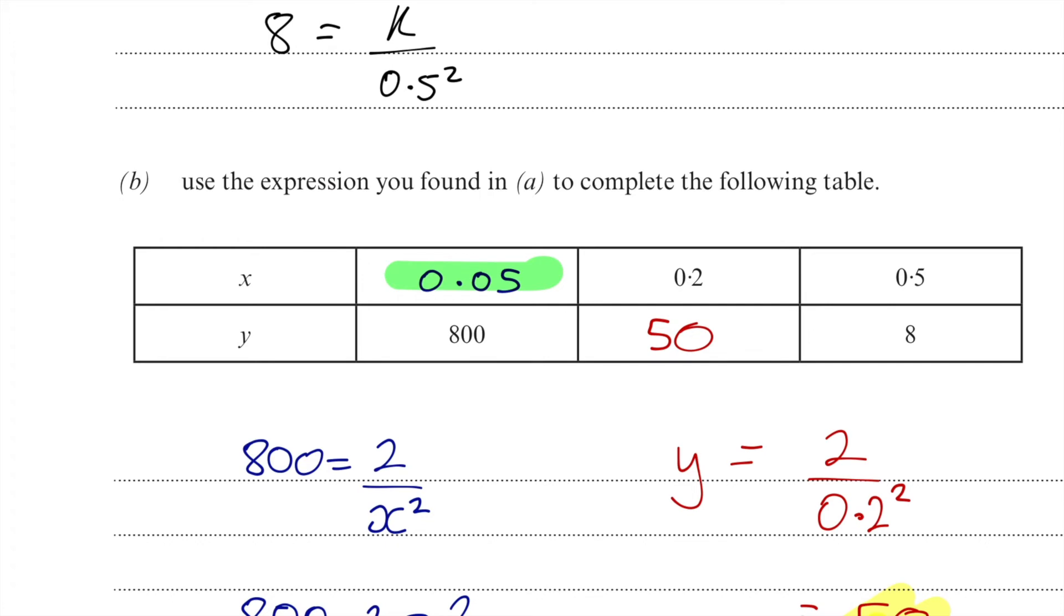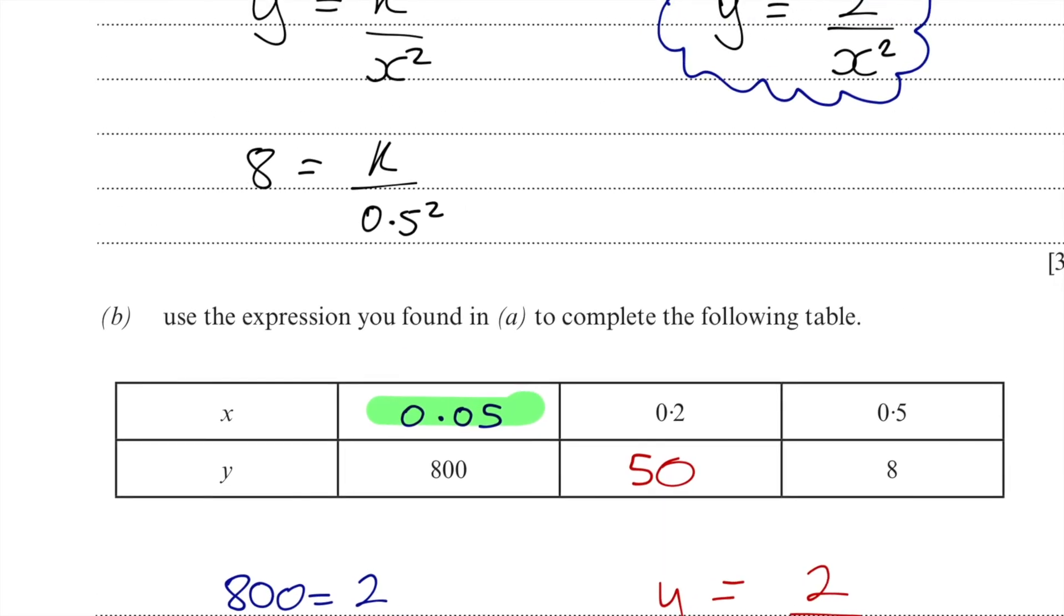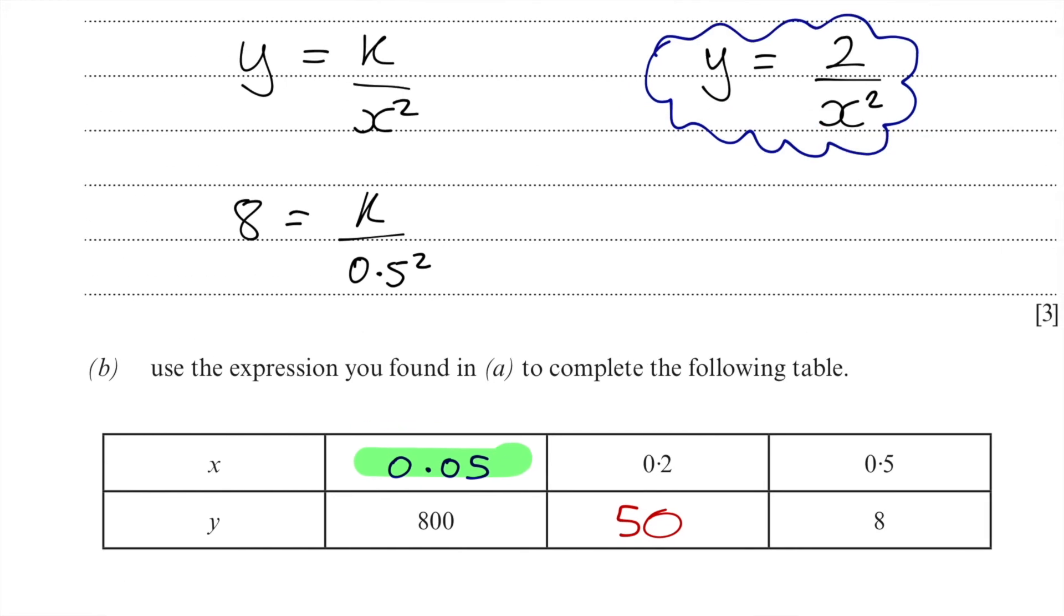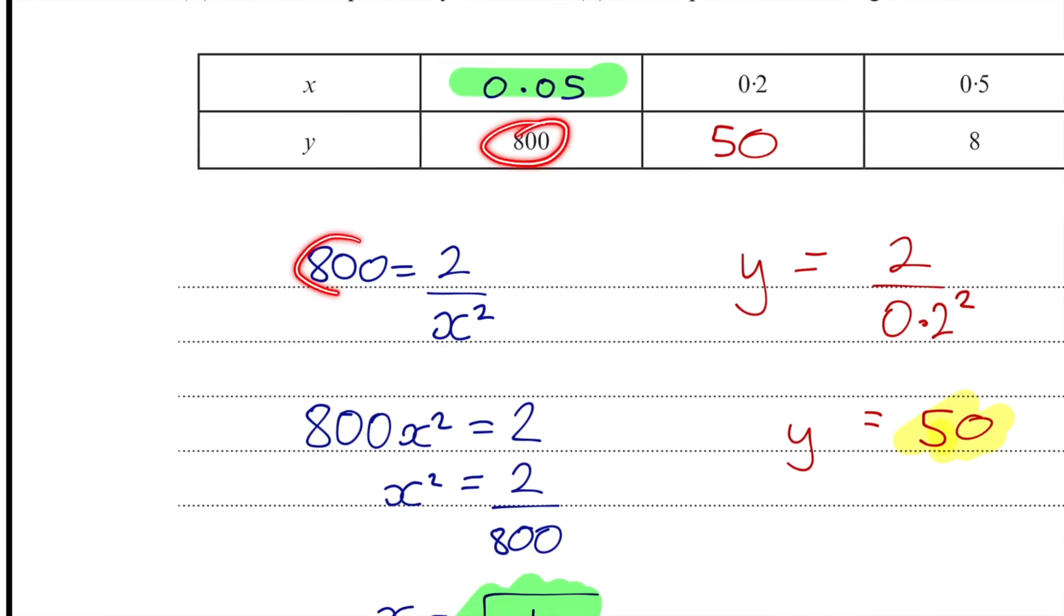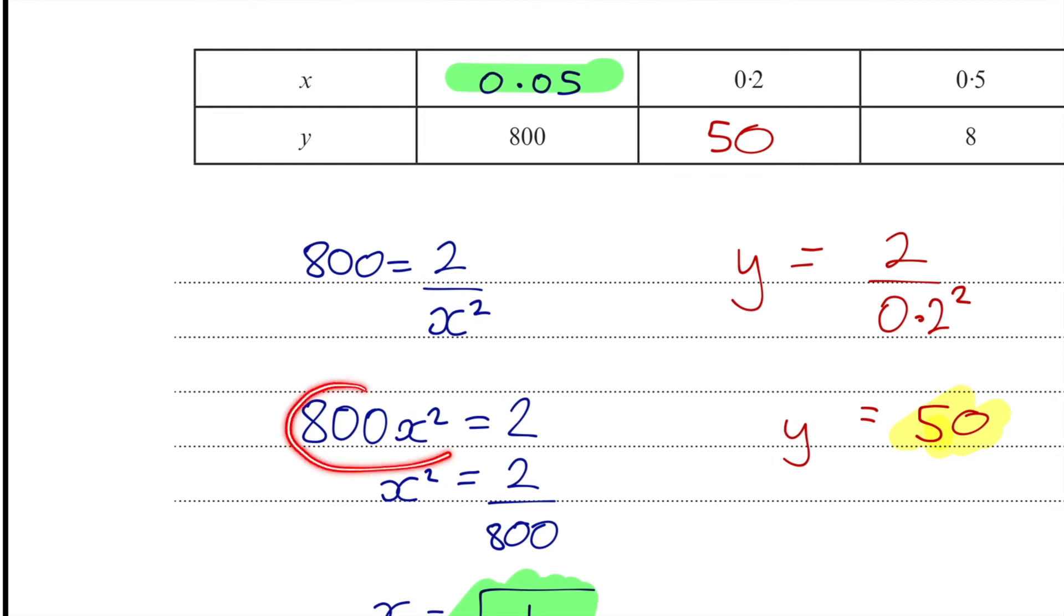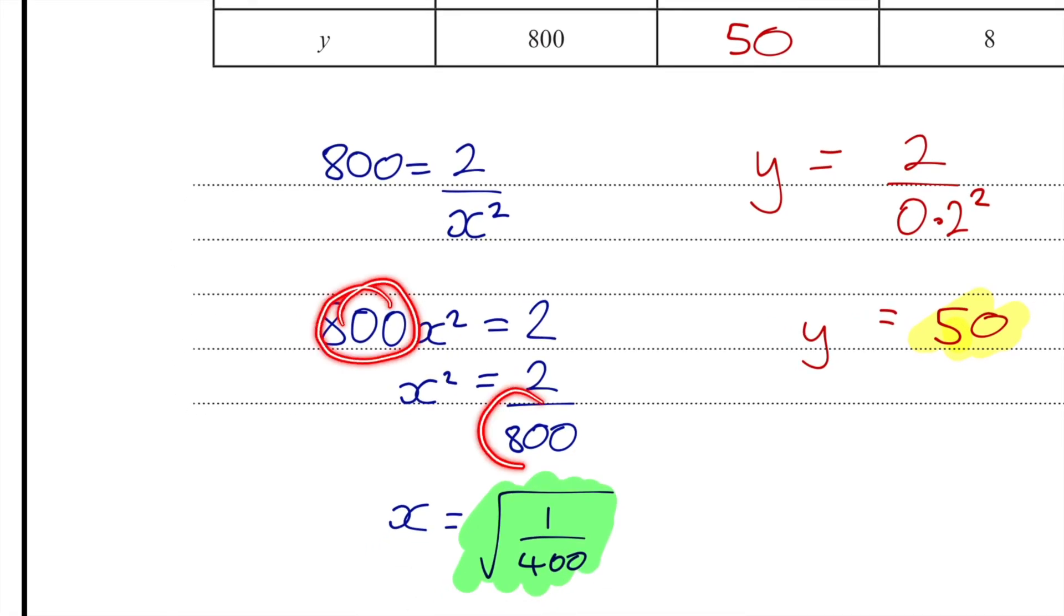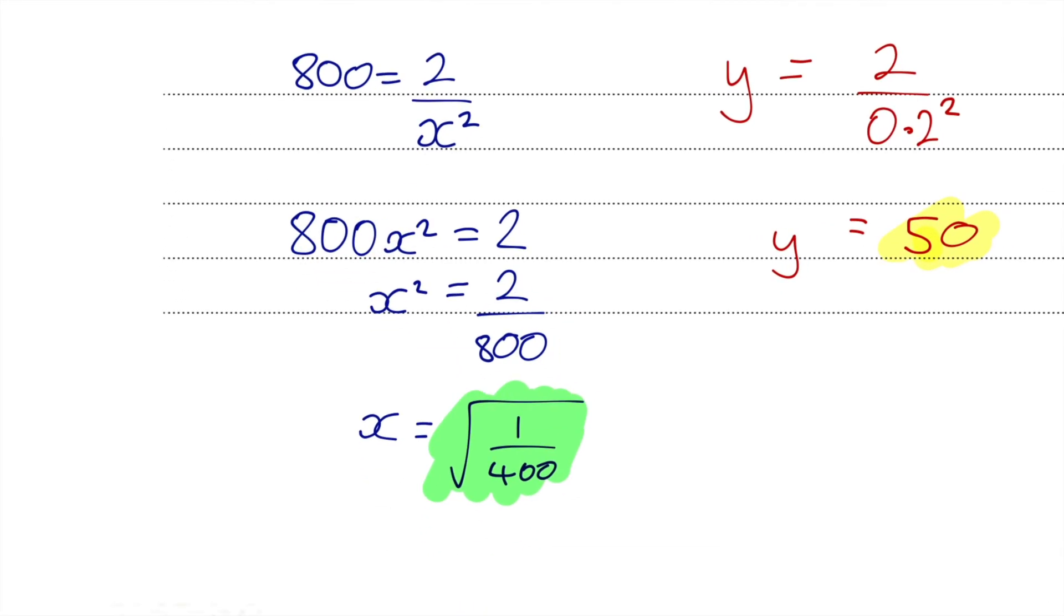In this first question, we weren't told what the value of this was. How did I work it out? Well, I went straight to y equals 2 over x squared and I changed the y for 800. I've then said that we've got 2 divided by x squared. I'm going to stop the x squared being divided by by times in both sides by x squared to get 800 x squared equals 2. I'm now going to get the x squared by itself by dividing both sides by the 800. I'm then going to get rid of the squared by square rooting here to get square root of 2 over 800, or 1 over 400, is equal to 0.05.